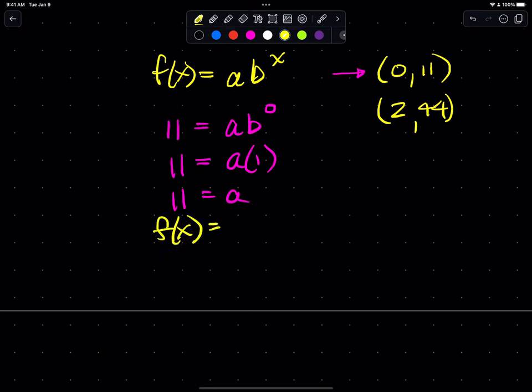Then I can use the second point, the 2 comma 44. I can put 44 in for the output or y value or the height of my function and put 2 in for x.